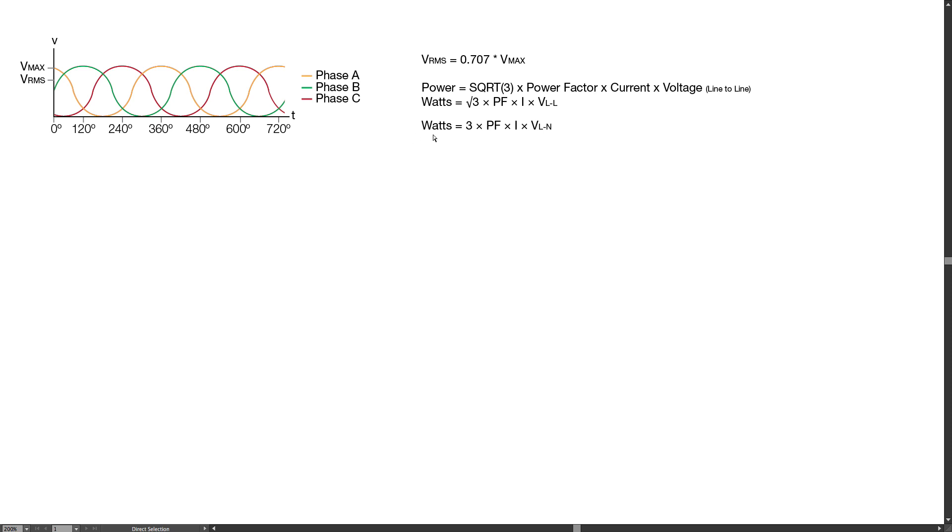Here is an alternate formula: watts equals 3 times the power factor times the current times voltage line-to-neutral. This would only be possible in a Y configuration.